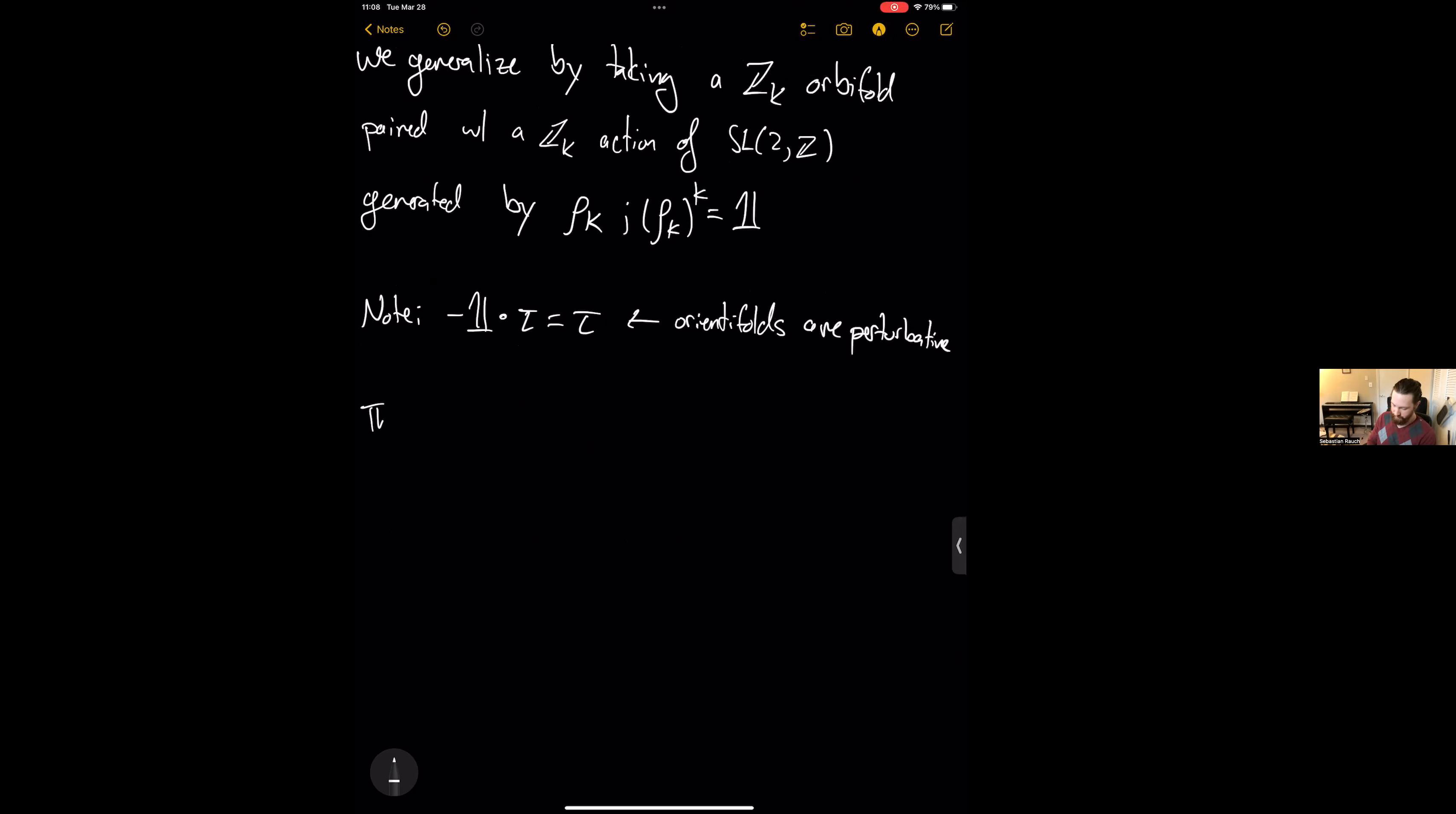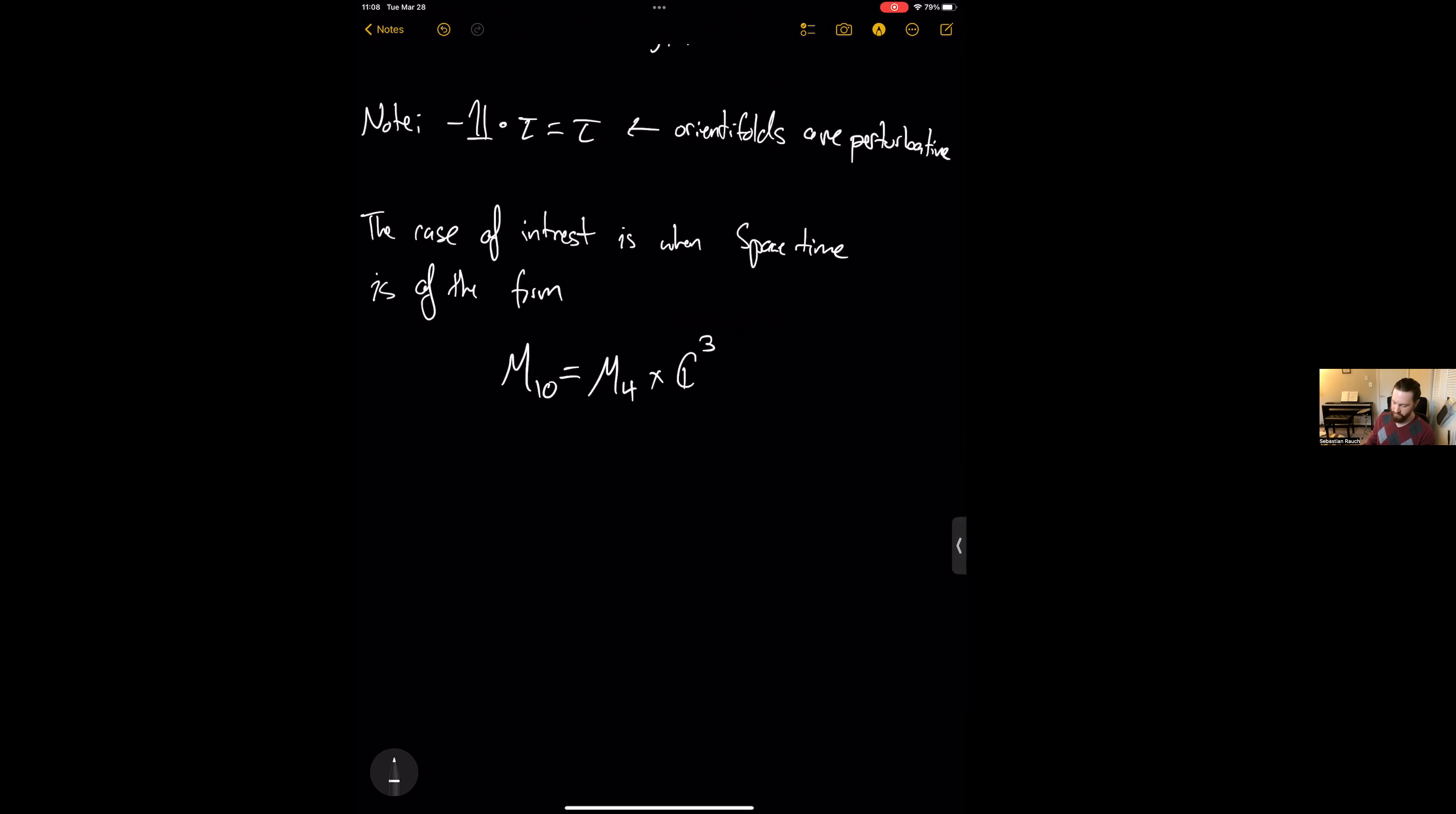Okay. So the case of interest for this work is when spacetime is of the form of a product. So I have this four-dimensional factor times the six-dimensional factor, which I'm going to take to be C3 for convenience. Now I can easily describe the ZK action, which is just going to be a complex rotation on C3. So if zi are my coordinates on the C3, then zi is sent to e to the 2 pi i by K zi.